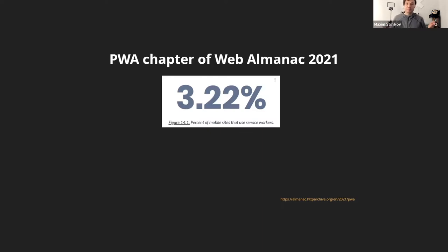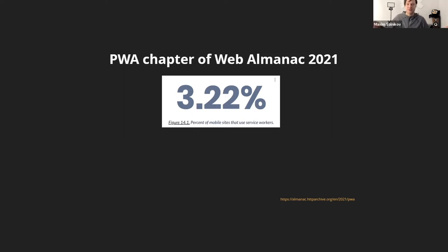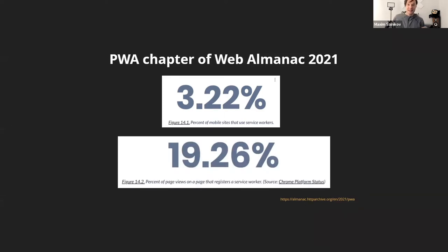Is PWA gaining popularity? Yes. The latest edition of the Web Almanac — a report I recommend reading carefully and one I'm proud to have contributed to — shows that over three percent of web addresses scanned, around seven million addresses, use a service worker. We can approximate that these are progressive applications, since service worker is the core engine of a PWA. And these three percent actually serve almost one fifth of all page load traffic, meaning quite large, popular websites are adopting this technology.